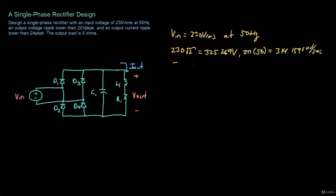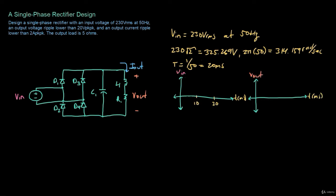Since the input voltage is 50 Hz, the period of one cycle is T = 1/50 = 20 milliseconds, so the input voltage repeats every 20 milliseconds. The input voltage waveform has a period of 20 ms and a peak magnitude of 325.27 volts. For a full wave rectifier with a capacitive filter, the output voltage charges up to the peak then decays, then charges again, and this pattern repeats.